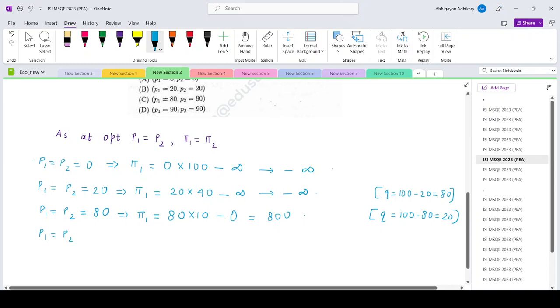And the last option is if the prices are 90, then it would be 90 into... If it's 90, then the total market demand would be 10 units. It would get 5 units of demand. And given the cost function, it would be 0. So this basically gives you 450.